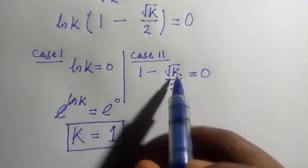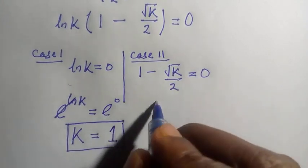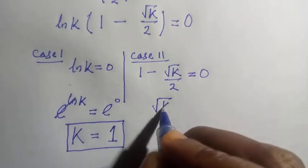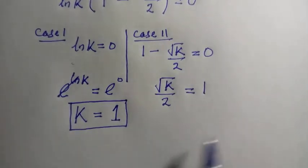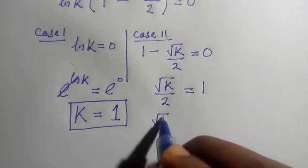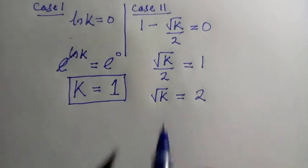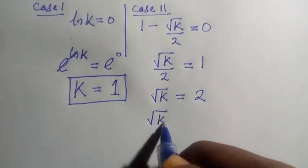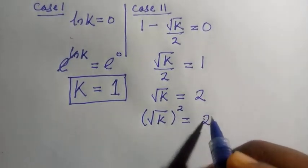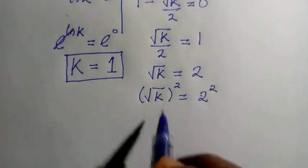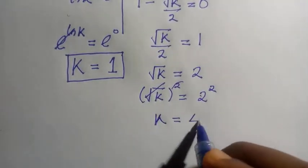And also, for the second case, 1 minus square root of k divided by 2 equals 0. We take the square root of k divided by 2 equals 1. Then we cross-multiply, giving root k equals 2 multiplied by 1, which gives us 2. And to get the value of k, we take the square of both sides to cancel the square root, giving 2 to the power of 2, so k equals 4.